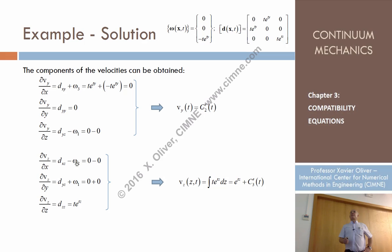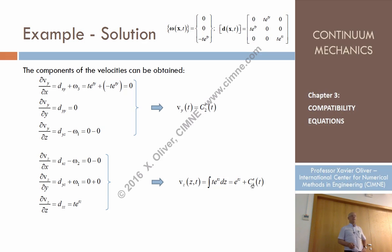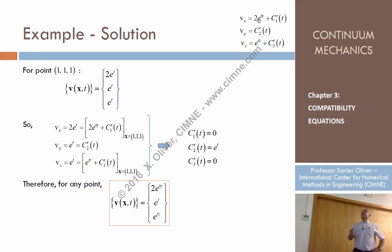For vz: the derivative with respect to x is D_xz = 0, omega 2 = 0; D_yz = 0, omega 1 = 0; and the derivative with respect to z is D_zz = te^(tz). So vz depends only on z and t. Integrating the primitive of te^(tz) with respect to z gives vz = e^(tz) + c'3.